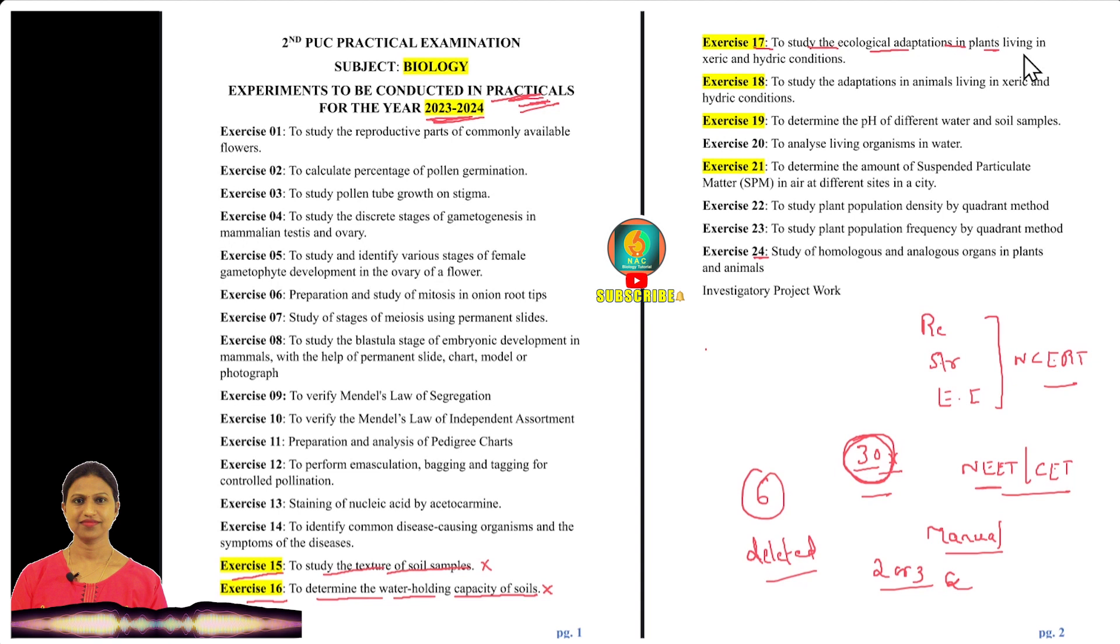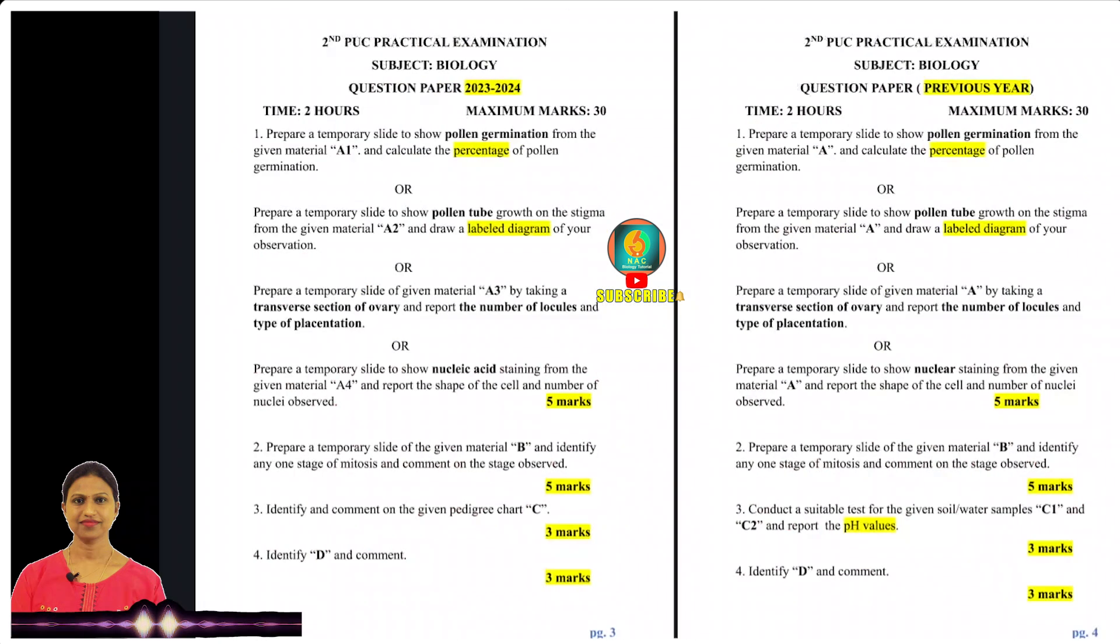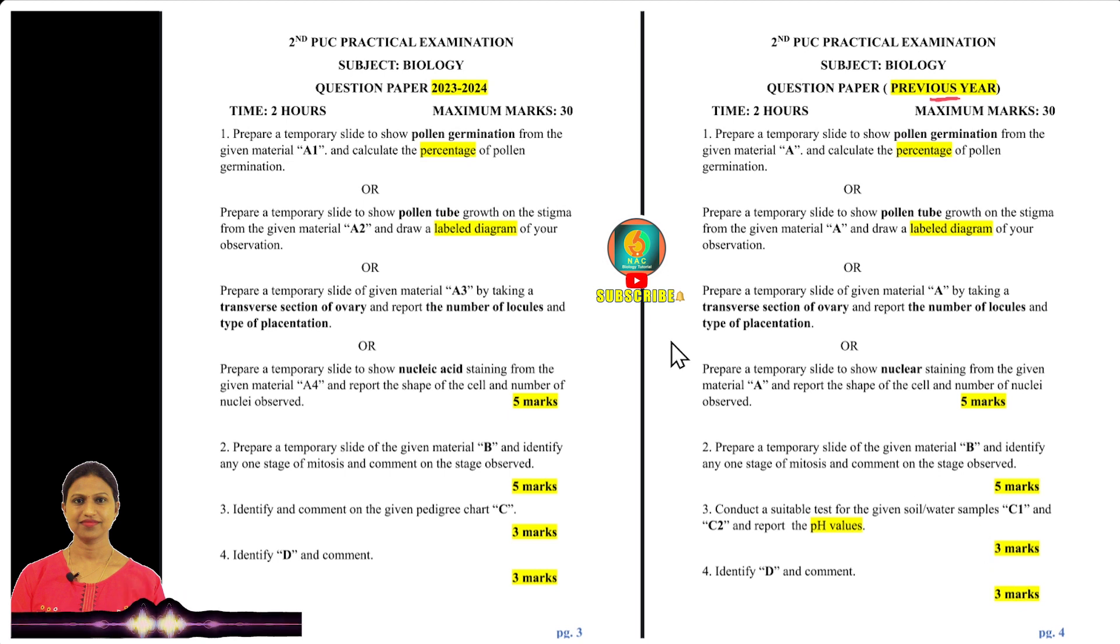Exercise 18, to study adaptations in animals living in xeric and hydric conditions. Exercise 21, to determine the amount of suspended particulate matter SPM at different sites in a city. These experiments are deleted. This year the experiments will change. If you look at the previous year question paper format.